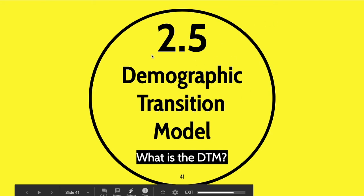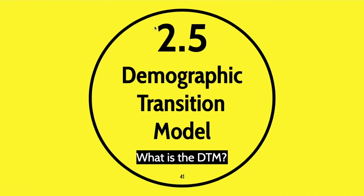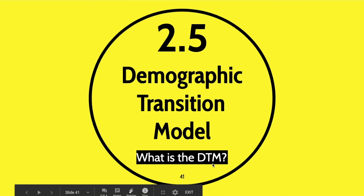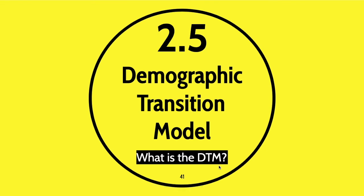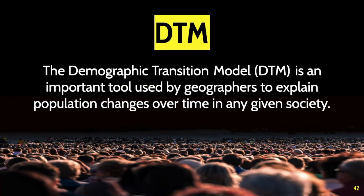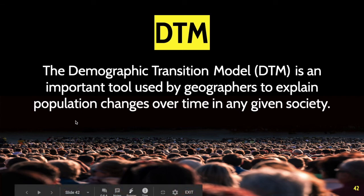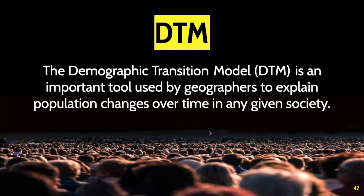The first section we're looking at today is called 2.5 Demographic Transition Model. The DTM, or demographic transition model, is something that we're going to be using from this point on to gauge where a country's development is. It's not always perfectly in line with this model, but it is pretty helpful, and what it allows us to do is explain these changes happening in a population through the model of development.